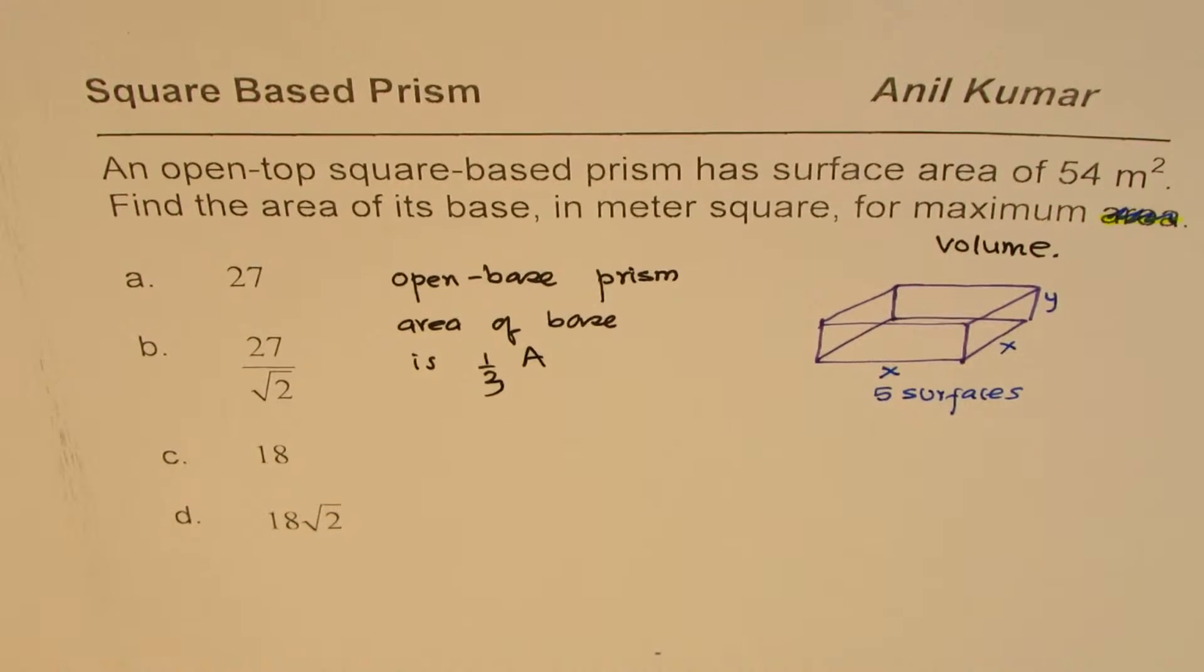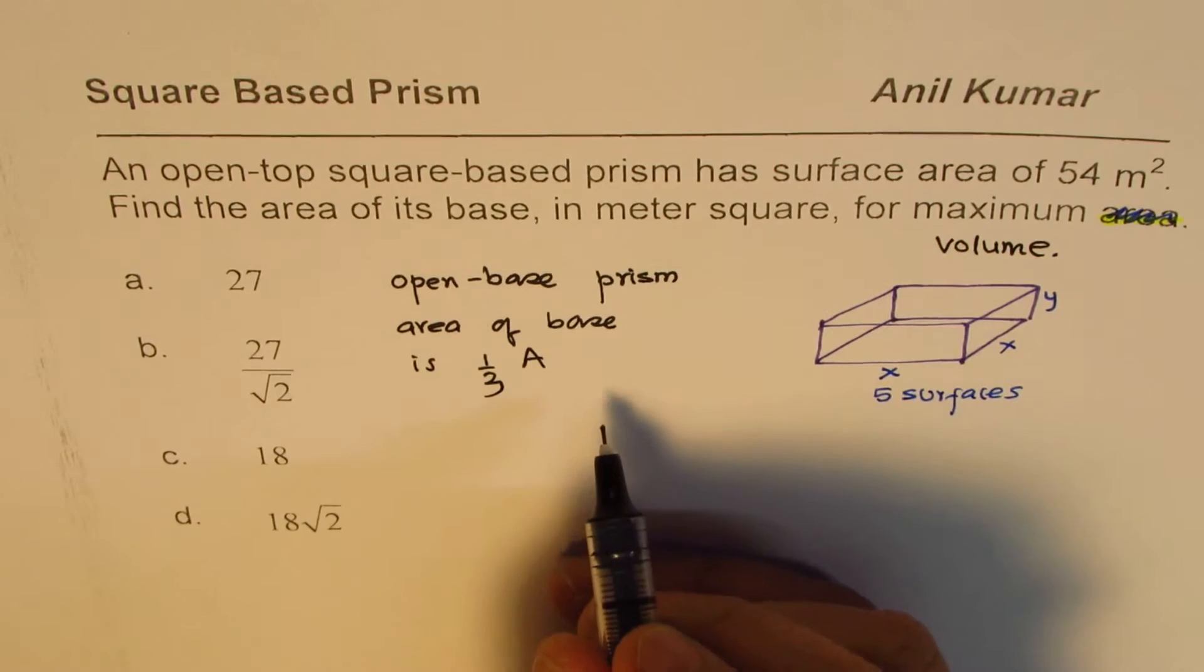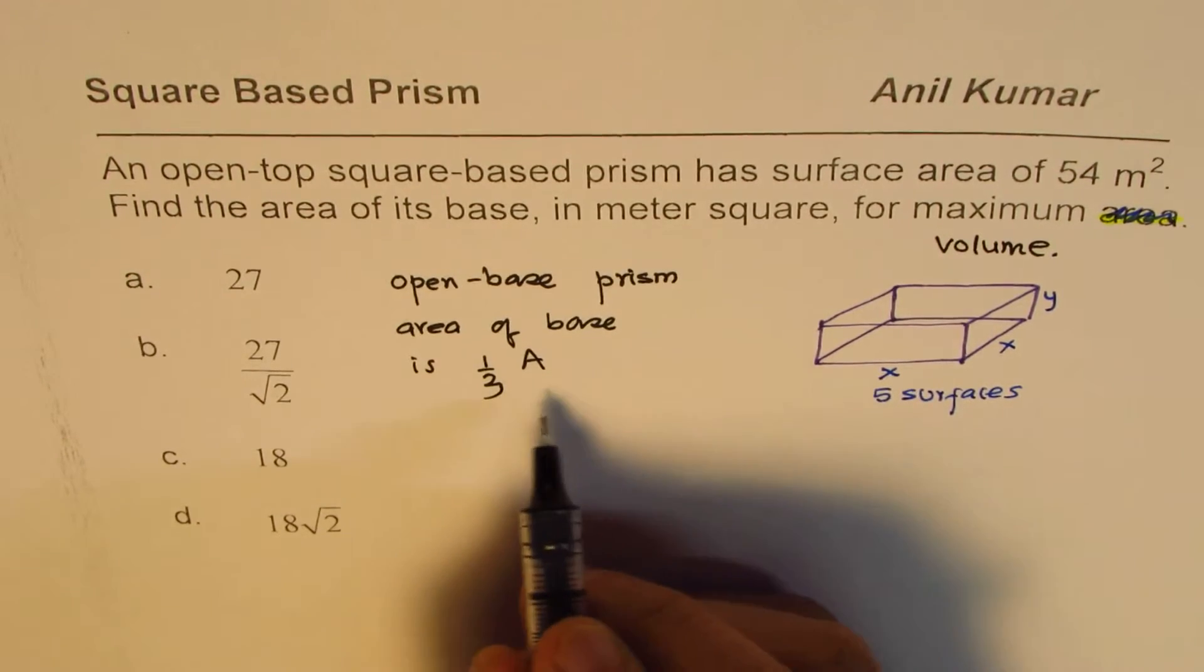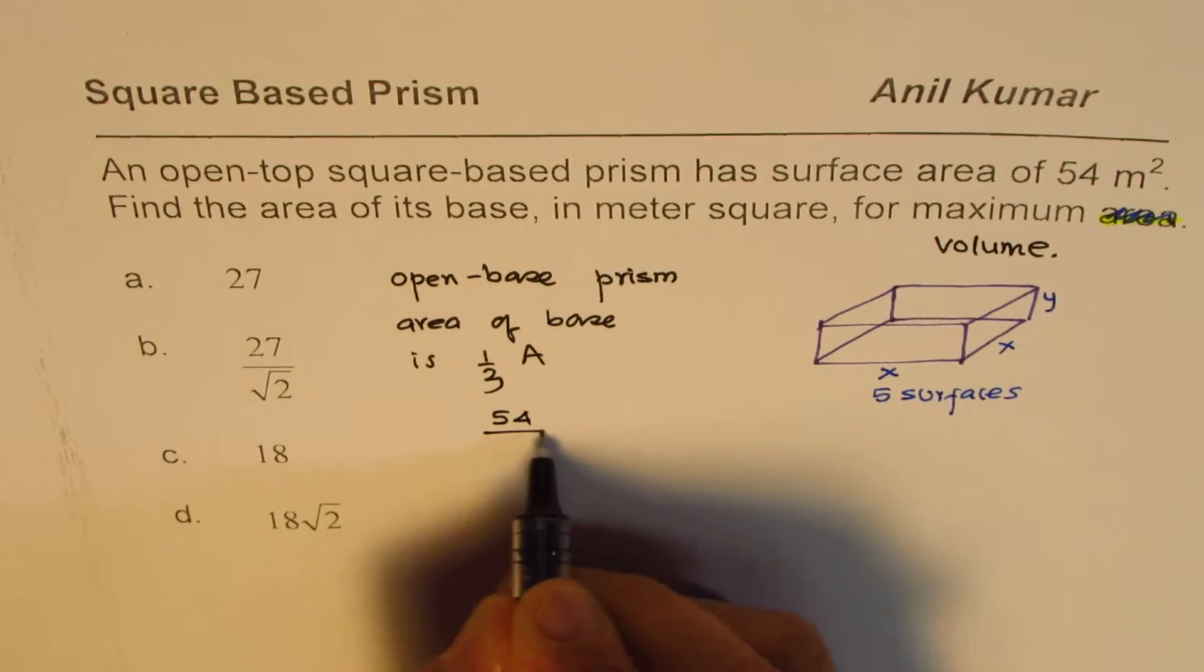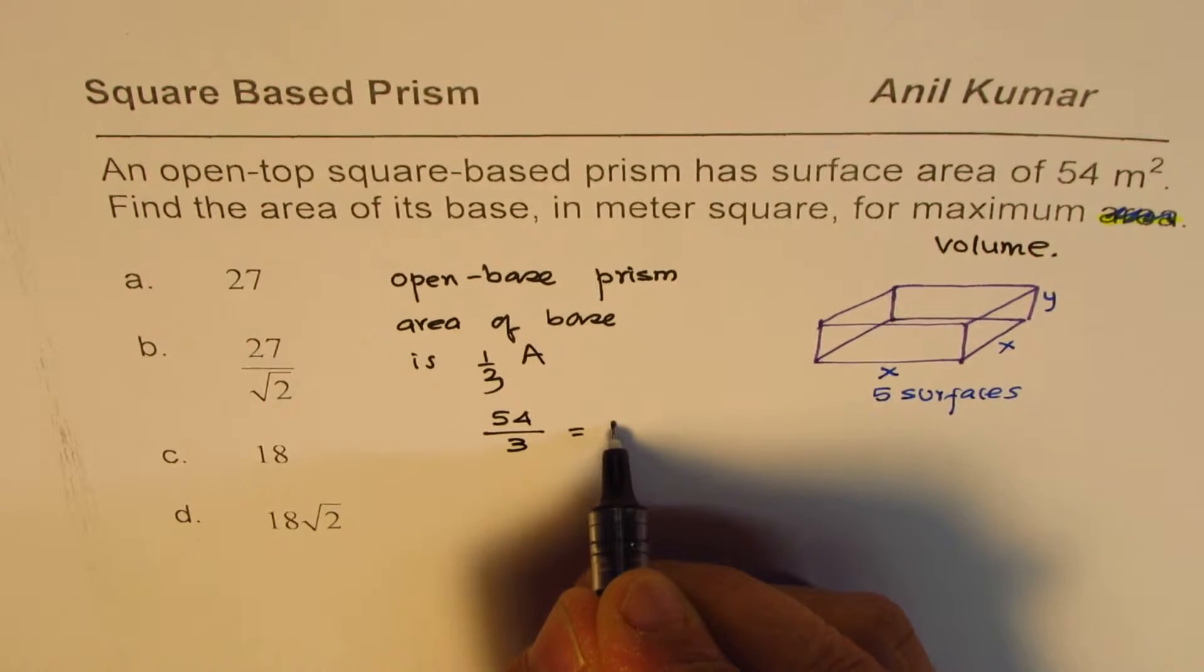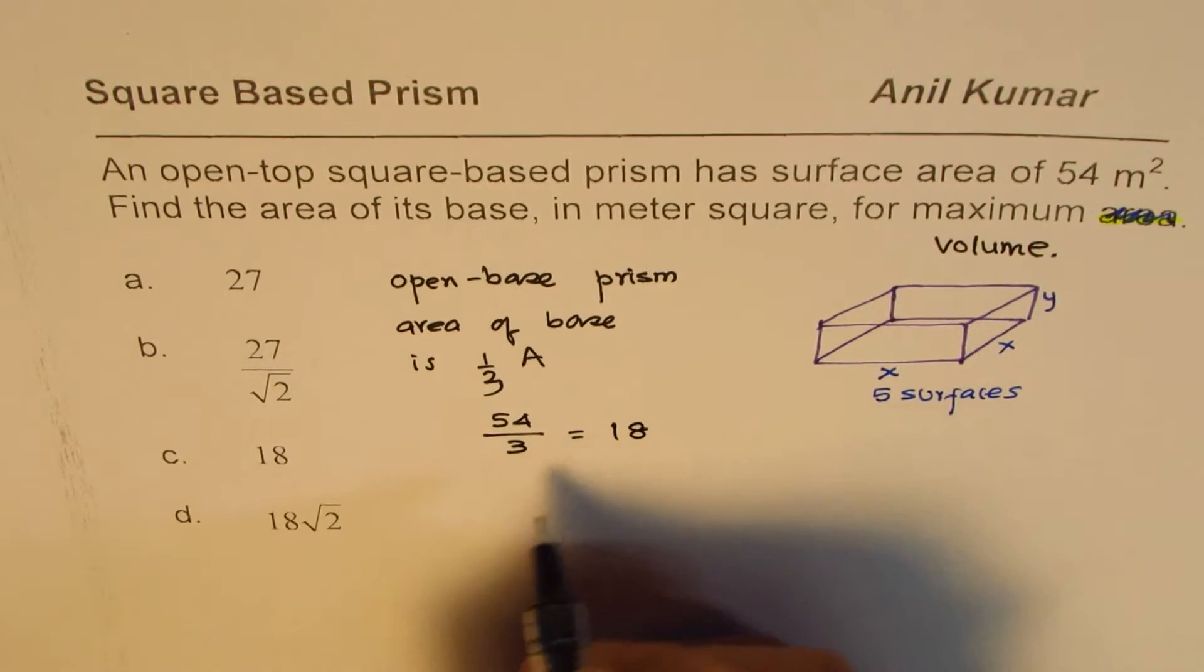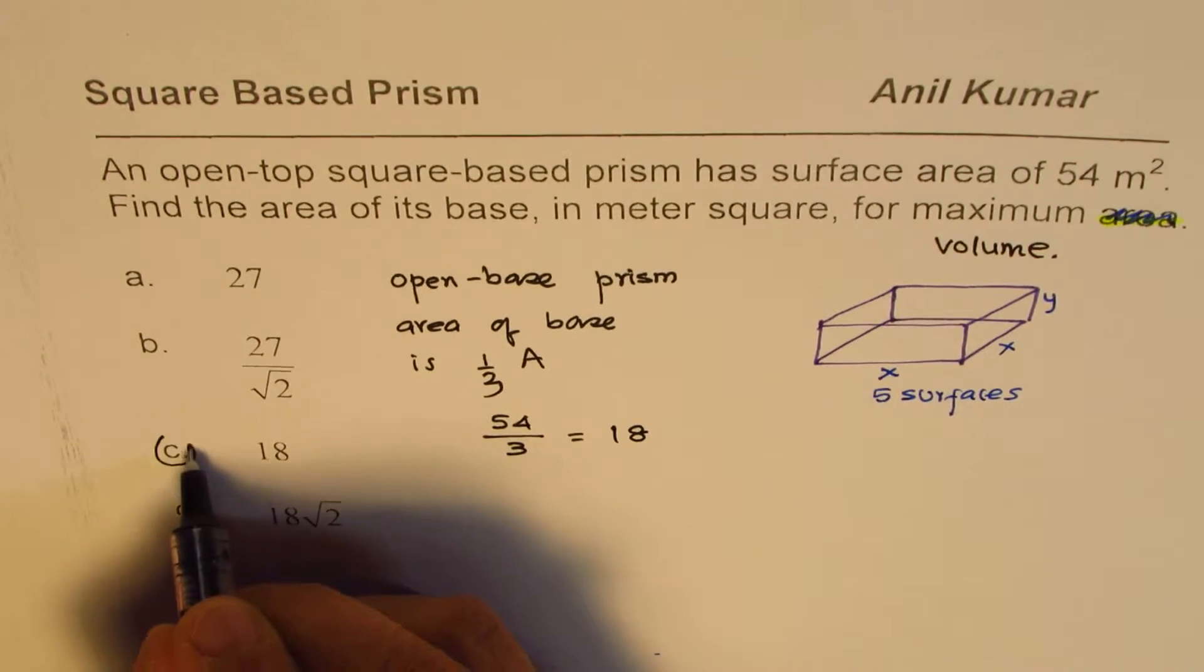If you know this formula, you can very easily find the answer. So the answer is 54 divided by 3 and that gives you the answer, which is 18. That is the correct answer.